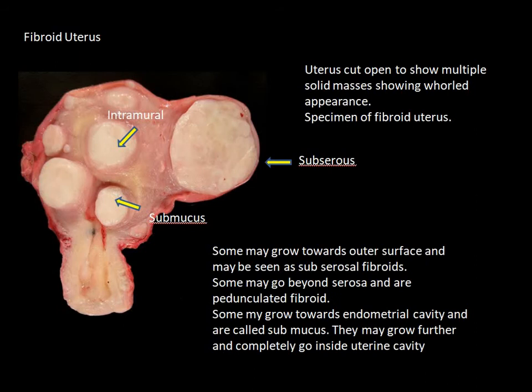This is the uterus cut open to show multiple solid masses, some showing whorled appearance. This is the sub-serous fibroid. This is intramural fibroid. This is submucous fibroid.